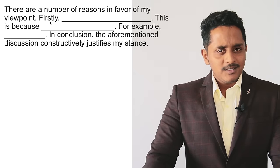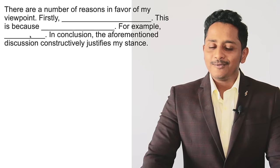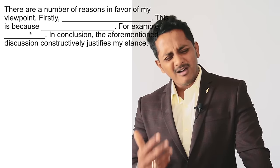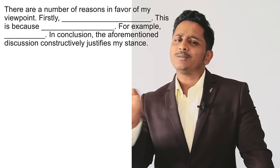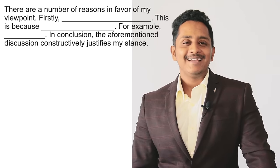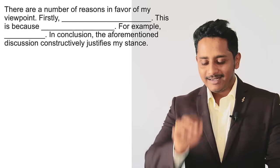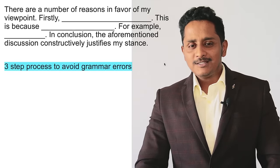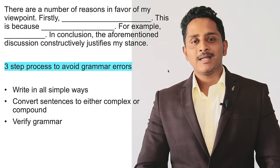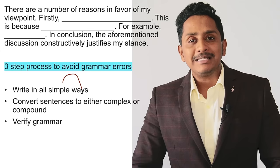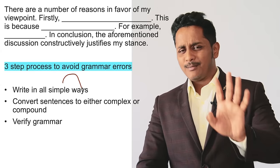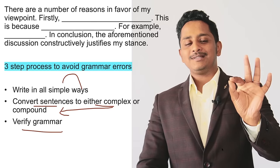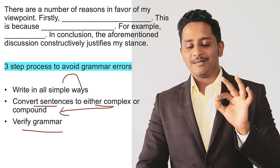This is the template: 'There are a number of reasons in favor of my viewpoint. Firstly... This is because... For example...' Three sentences I need. One of them should be simple, one compound, one complex. Or you can write compound, compound, compound — or complex, complex, complex. Not a problem. Three-step process to avoid grammar errors: Step one — write in all simple ways, write simple sentences. Step two — convert the simple sentences to either complex or compound. Step three — verify the grammar.